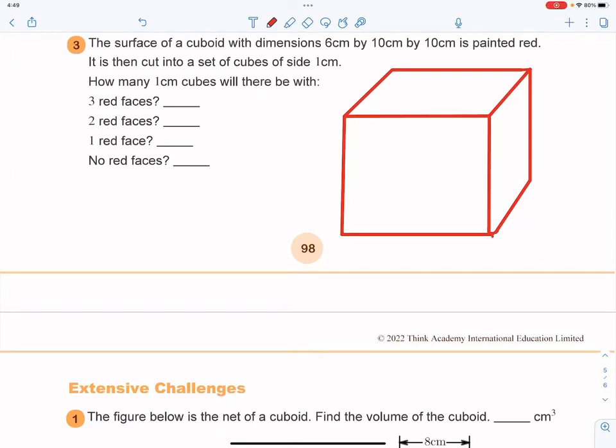Question number three in the extensive exercise is lesson five. The surface of a cuboid with dimensions 6 by 10 by 10 is painted red. It is then cut into a set of cubes of side 1. How many 1cm cubes will there be with?